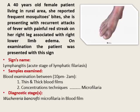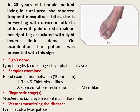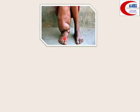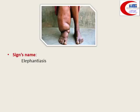The vector transmitting this disease is the female Culex mosquito — the most important vector. It is the species transmitting the disease in Egypt. The second case shows a leg that looks like an elephant's leg — this is the chronic obstructive stage, called elephantiasis.